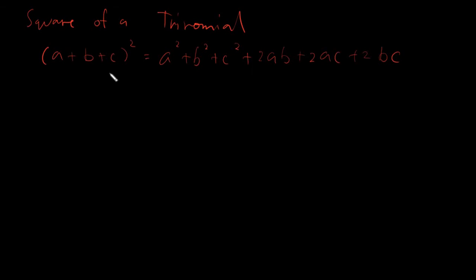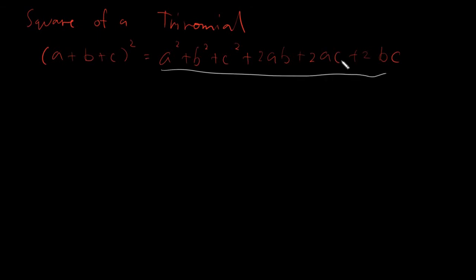So the square of trinomial would be in this structure. A, B, and C will just be denoting your first, second, and third term. And this would be our general structure for our square of trinomial. I will not write down the rules because the rules are already stated here.